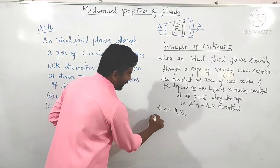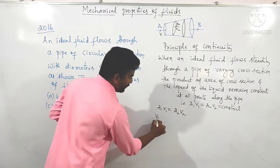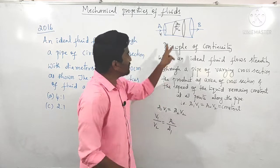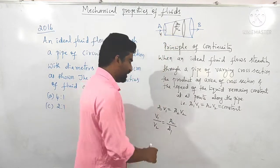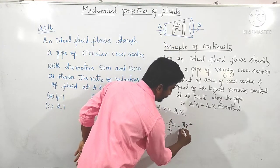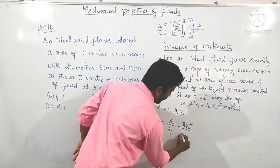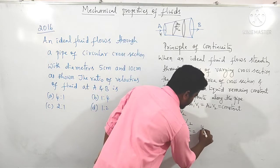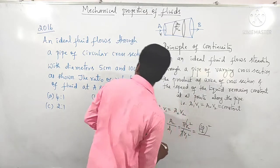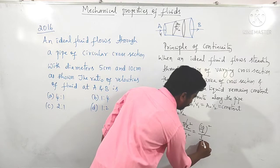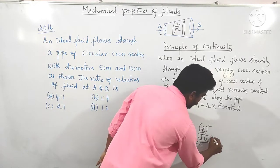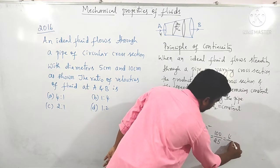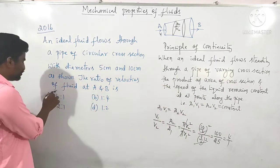So velocity at A divided by velocity at B equals A2 divided by A1. Since the cross-section is circular, area equals pi r squared. Substituting: VA/VB = (pi times (10/2)²) / (pi times (5/2)²). Pi cancels out, giving (10²) / (5²) = 100/25 = 4/1. The answer is 4 to 1.